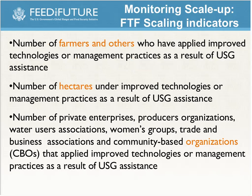The third indicator is really about groups. It's very similar to the first indicator, which measures individuals, but the third indicator focuses on groups that are applying improved technologies. It's disaggregated in a similar way to the number of farmers.